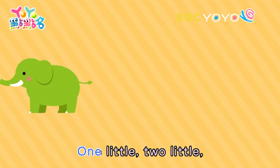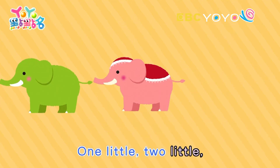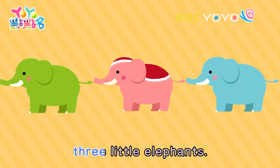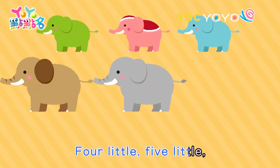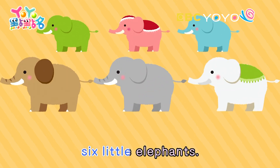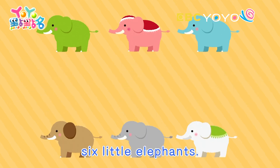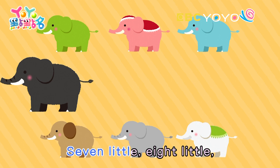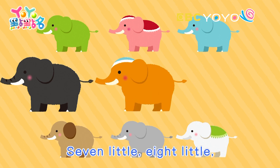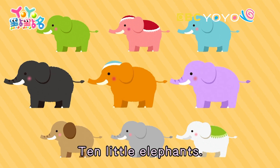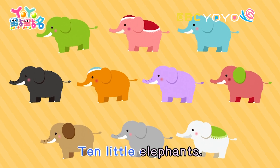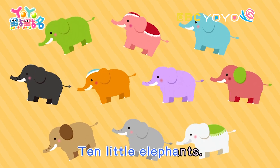Ten little elephants. One little, two little, three little elephants. Four little, five little, six little elephants. Seven little, eight little, nine little elephants. Ten little elephants.